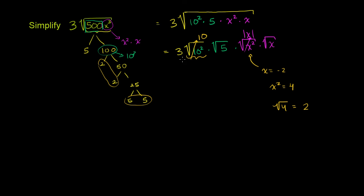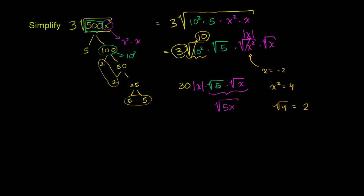Since we're just multiplying a bunch of expressions here, it doesn't matter what order we do it. We can put all the stuff out of the radicals together first: 3 times 10 times the absolute value of x. That gives us 30 times the absolute value of x. Then we have the square root of 5 times the square root of x, which we can rewrite as the square root of 5x — you're taking the product of two things raised to the same power. So this all simplifies to 30 times the absolute value of x times the square root of 5x.